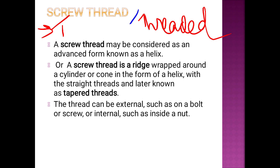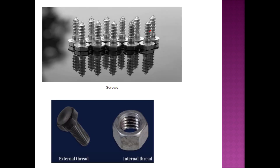A screw thread has a helix with grooves on a cylindrical surface, both inside and outside. There are two types of screw thread: external and internal. The shaft uses an external thread, and the ring or nut uses an internal thread.